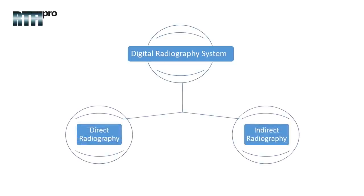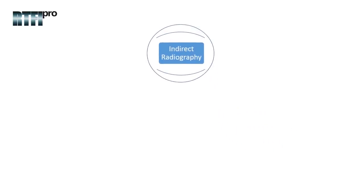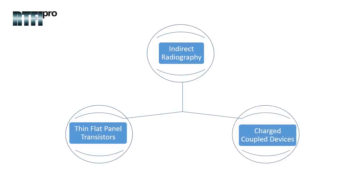Digital radiography can be divided into two categories such as direct and indirect, whereas indirect radiography can be further subdivided into thin flat panel transistors known as TFTs or charge-coupled devices.